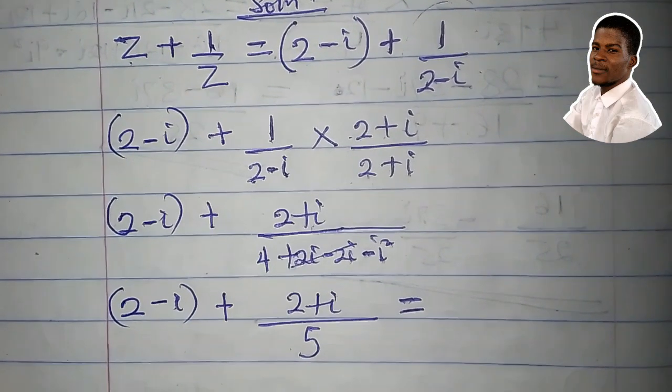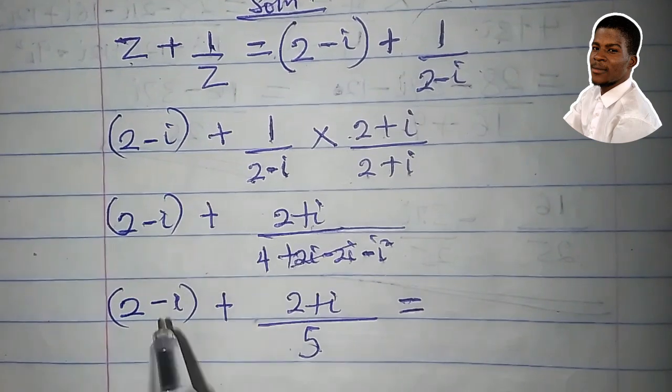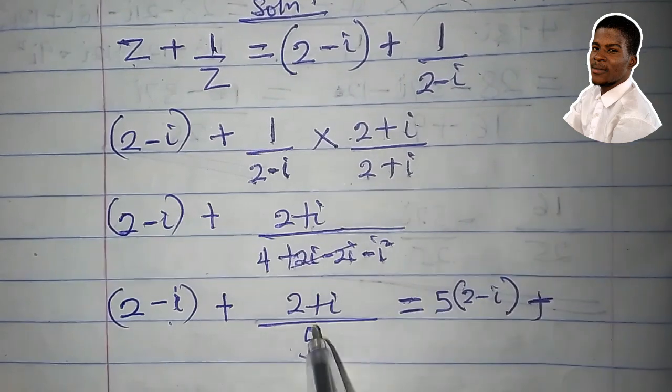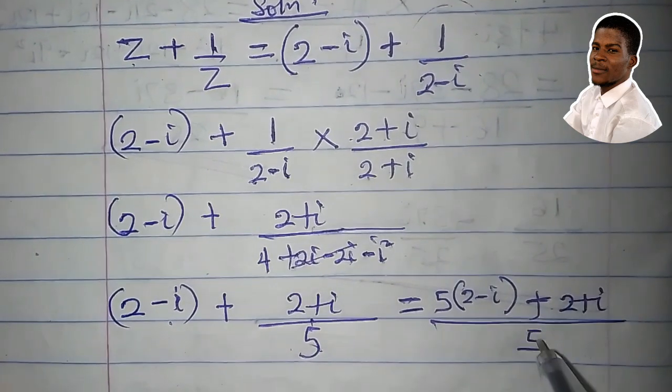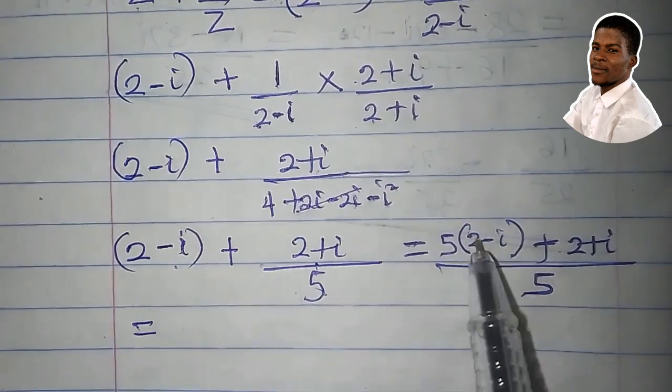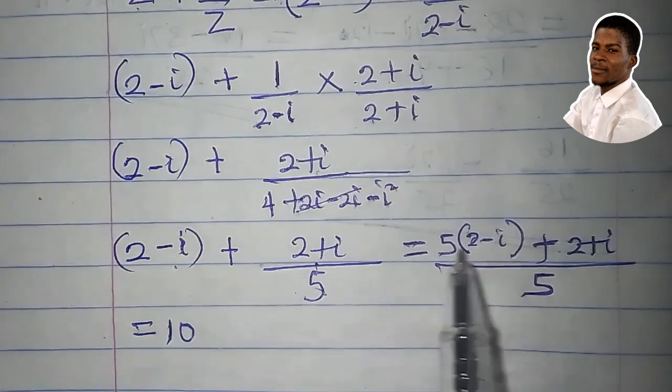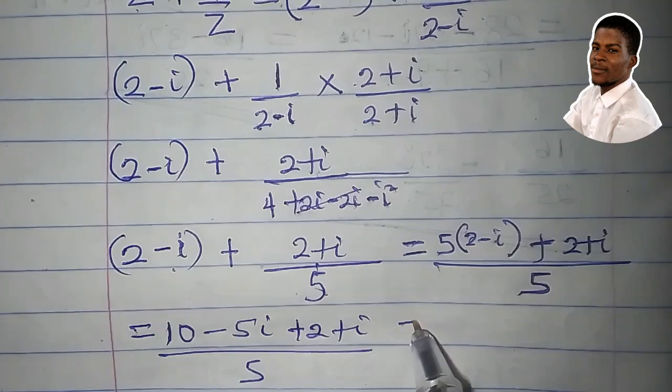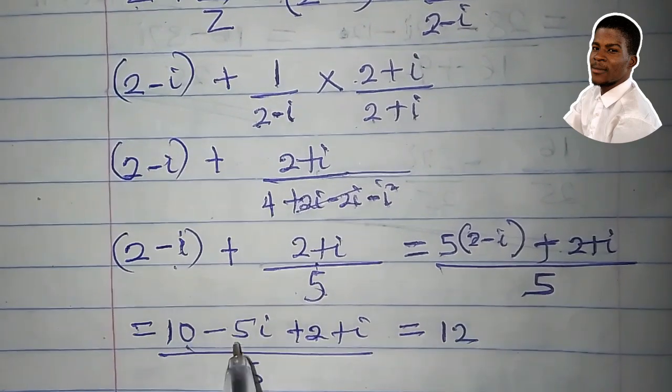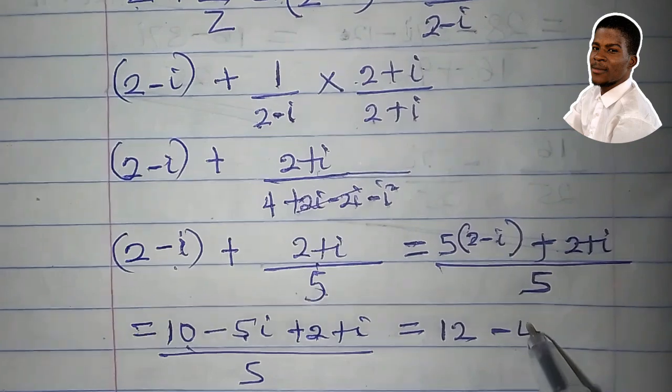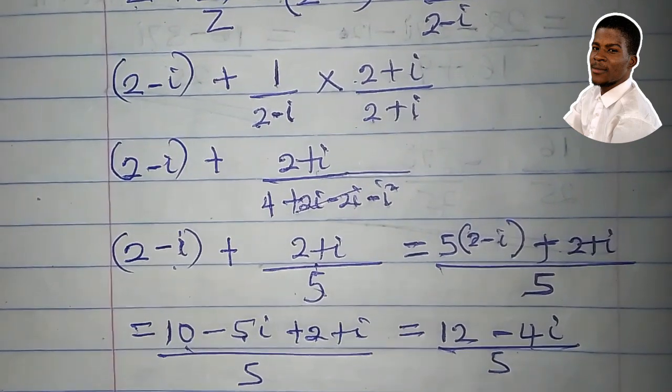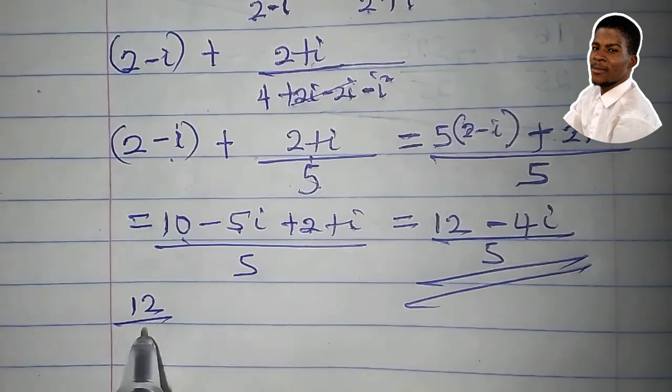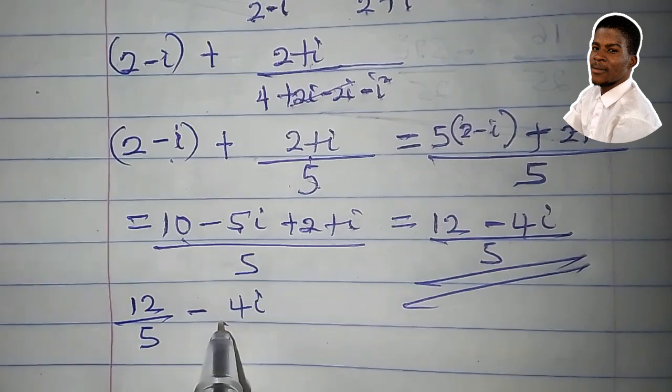So we can simplify this. A very simple way to do that. 5 times 2 minus i plus 2 plus i all over 5. 5 times 2 is 10. 5 times minus i is minus 5i plus 2 plus i all over 5. 10 plus 2 is 12. Minus 5i plus i is minus 4i all over 5. We can as well write it as 12 over 5 minus 4i over 5.